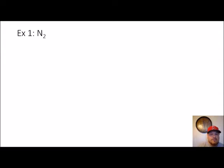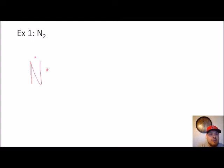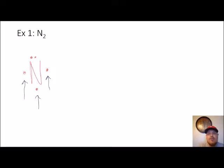So I'm going to draw a Lewis dot structure for nitrogen with its five valence electrons: one, two, three, four, five. Now if you look at this Lewis dot structure, you'll notice that three of these electrons are unpaired. Those three unpaired electrons tell us how many covalent bonds a nitrogen atom can make. According to my diagram, it can make up to three covalent bonds — in other words, it can make a triple bond, a single bond, or a double bond if it needs to.